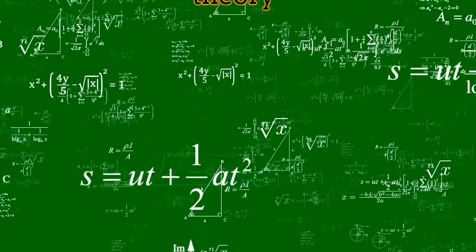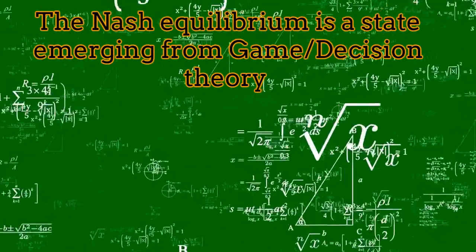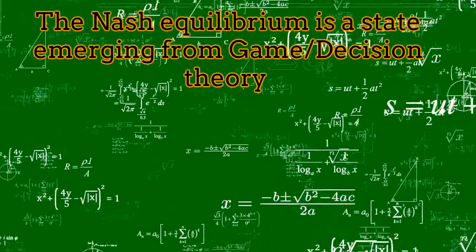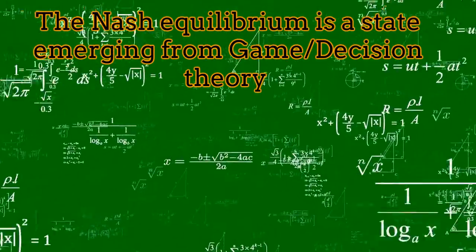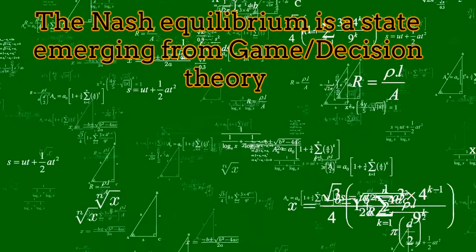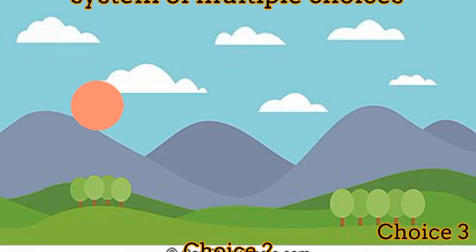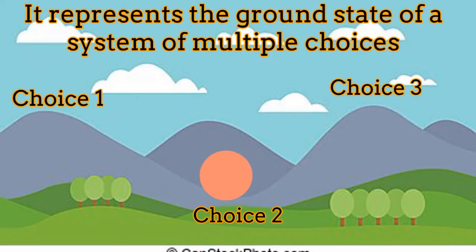The Nash Equilibrium was discovered inside the scenario of game theory, or decision theory more generally. We can visualize the Nash Equilibrium as the ground state of a system, created by the multiple choices of two participants given some specific situation. Let's explore this issue in deeper detail.